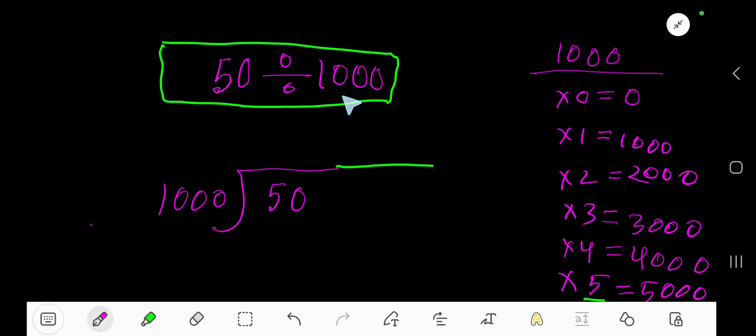50 divided by 1,000. Okay, 1,000 goes into 50 how many times? Zero times, as 50 is less than 1,000. Zero times 1,000 is zero. Subtract, then you are getting the same thing. If you